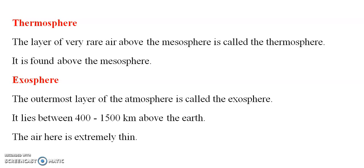The thermosphere is found above the mesosphere. Then finally, the exosphere. The outermost layer of the atmosphere is called the exosphere. It lies between 400 to 1500 km above the earth. The air is extremely thin in this layer.